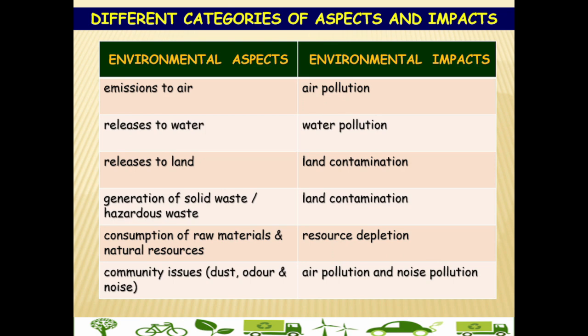These are different categories of environmental aspects and impacts. Examples of environmental aspects are: emission to air, releases to water, releases to land, generation of solid waste, hazardous waste, consumption of raw material and natural resources, and community issues like dust powder and noise nuisance. The corresponding environmental impacts are: air pollution, water pollution, land pollution, resource depletion, and noise pollution.